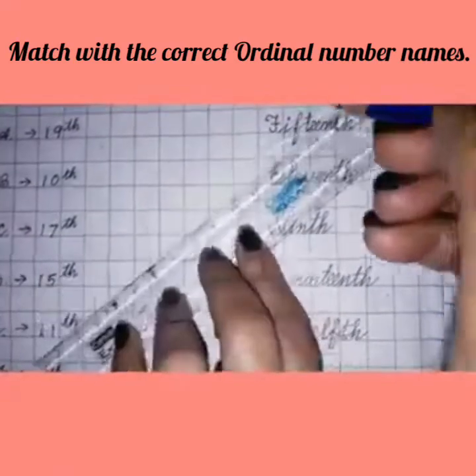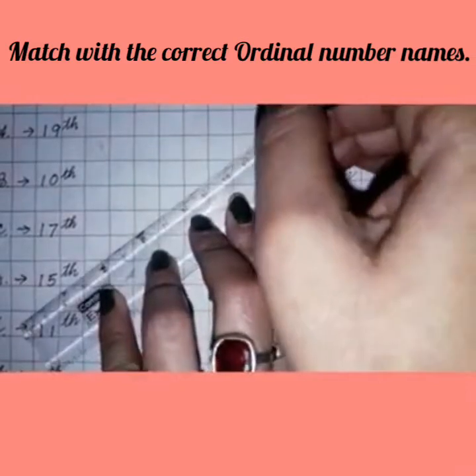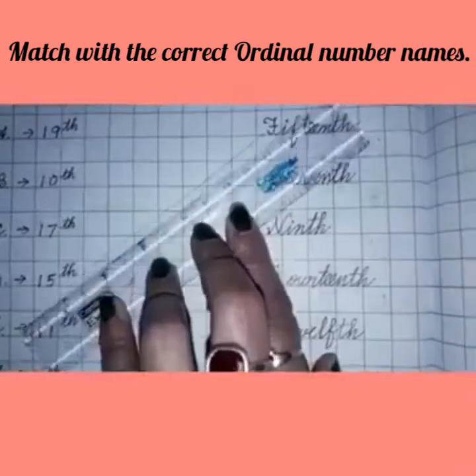Take the ruler. And after writing ordinal number name 15th, you will match with this number like this.